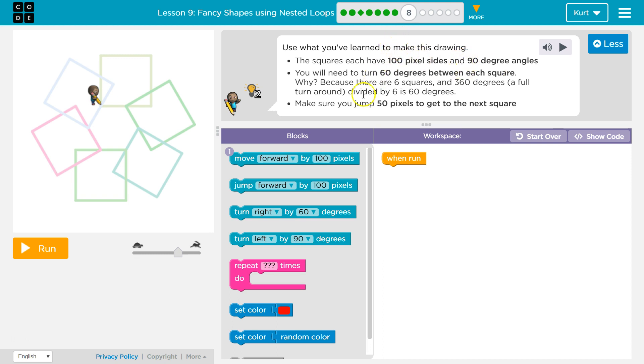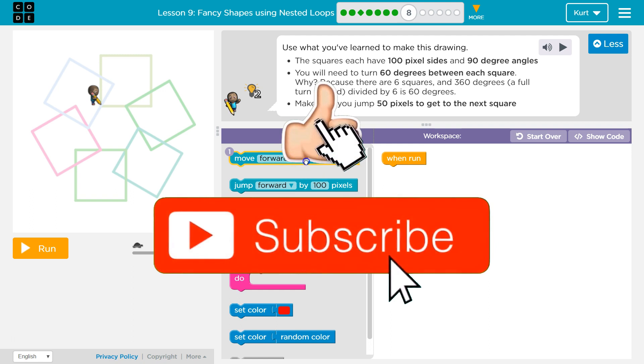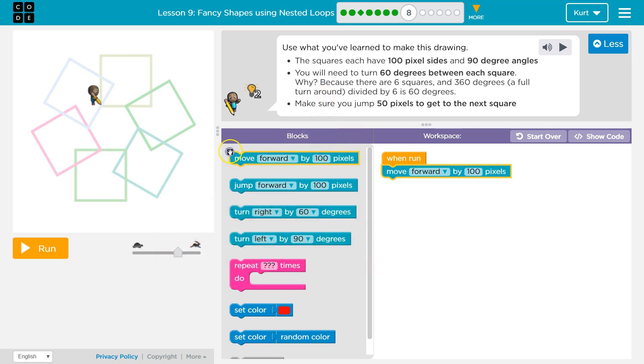Use what you've learned to make this drawing. The squares each have 100 pixel sides and 90 degree angles. Okay, I'm going to start right there. 100 pixel sides. Oh, and we can only use one move forward in this. See, now it says zero. And 90 degree angles.